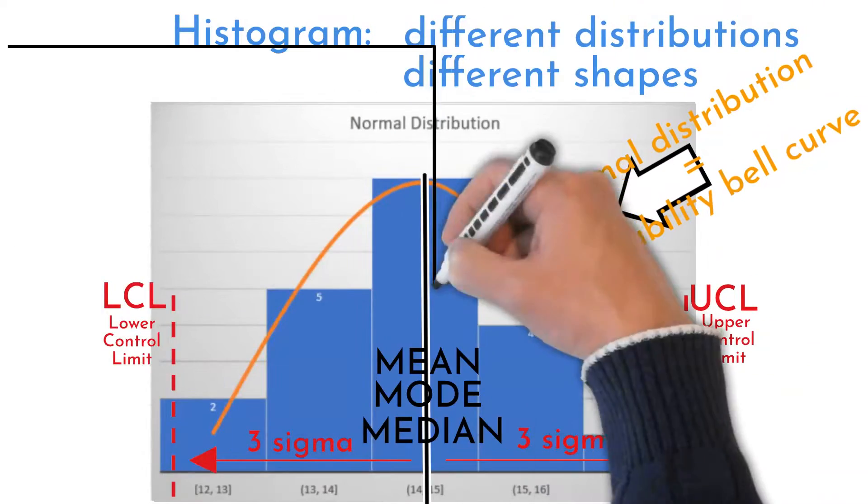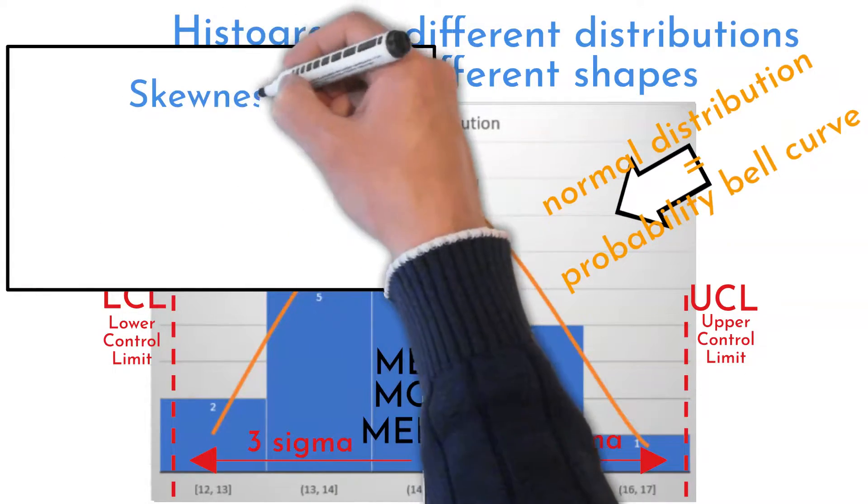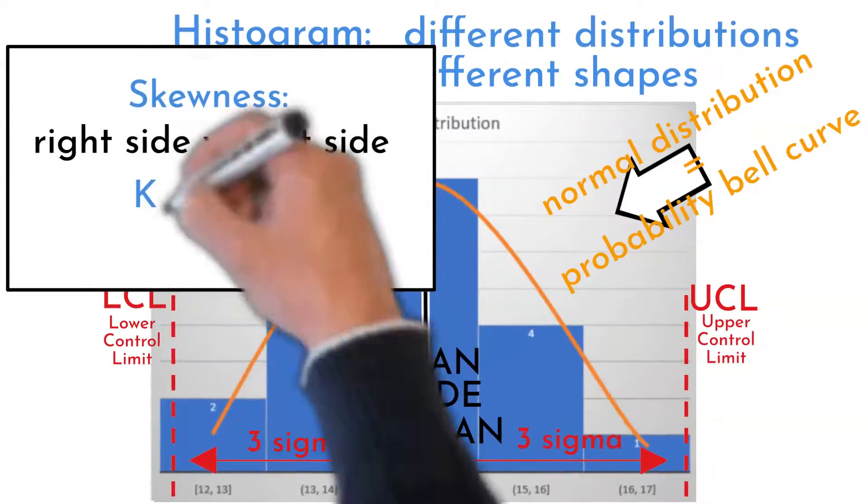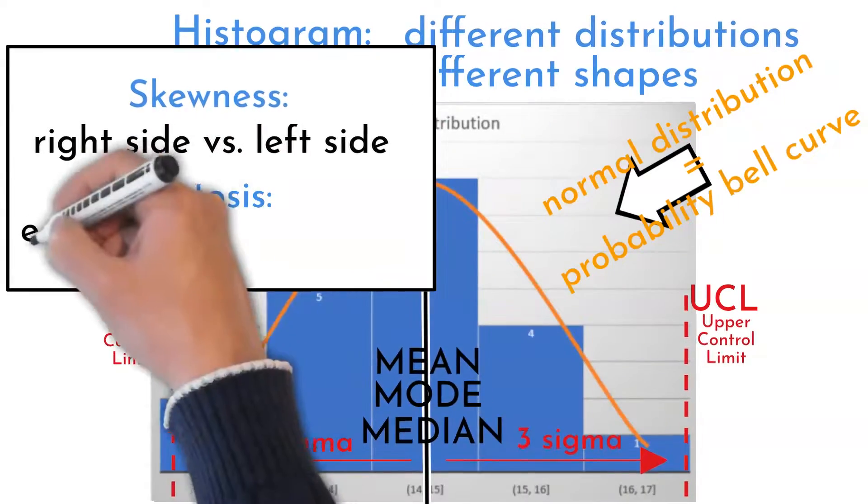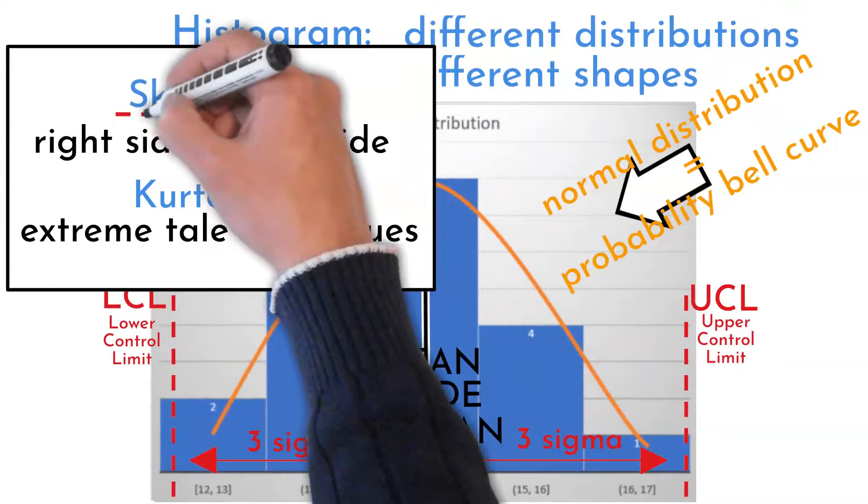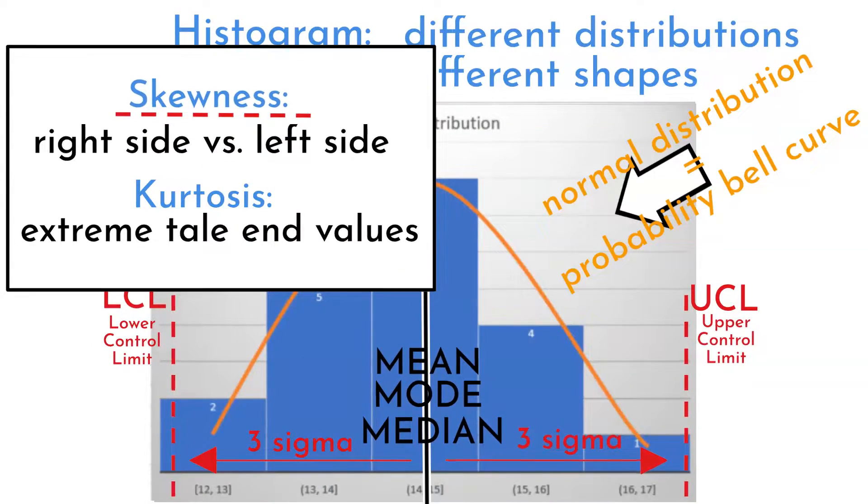Real data rarely follow normal distribution. Skewness describes differences between values on distribution right or left side end. Kurtosis is another parameter describing extreme values on curved tails. Both parameters review distribution comparing to normal distribution. But we will focus on skewness now.